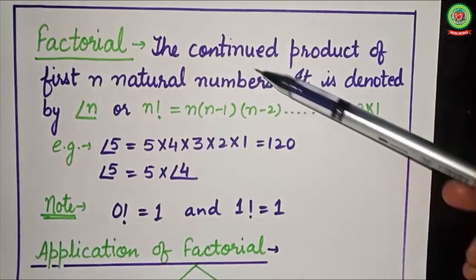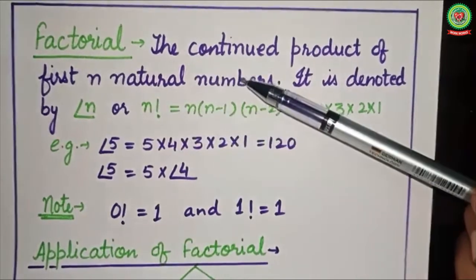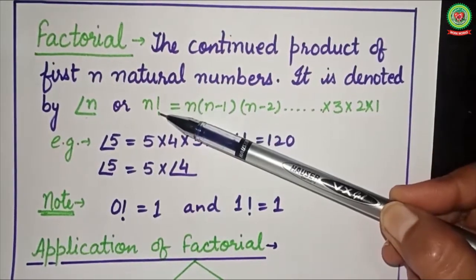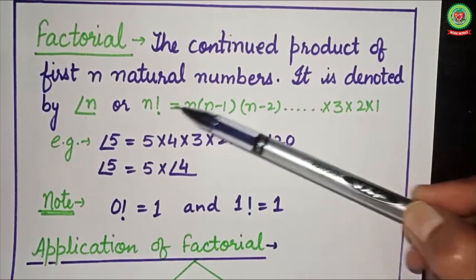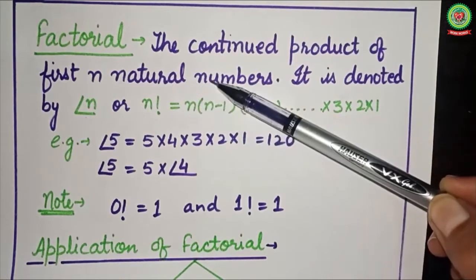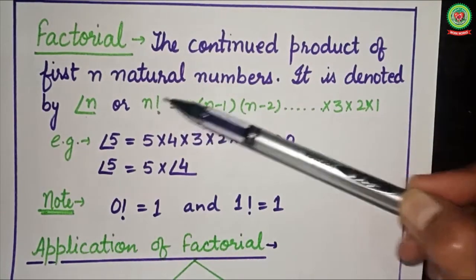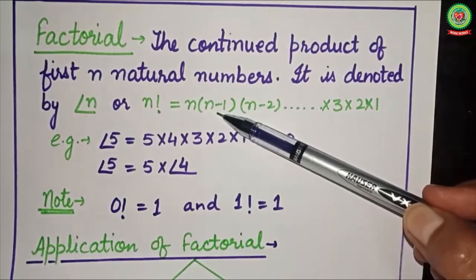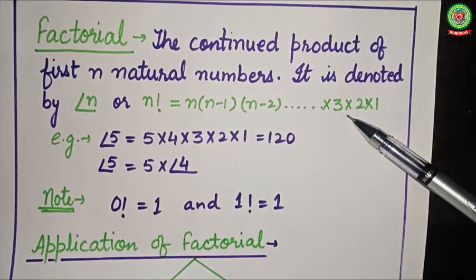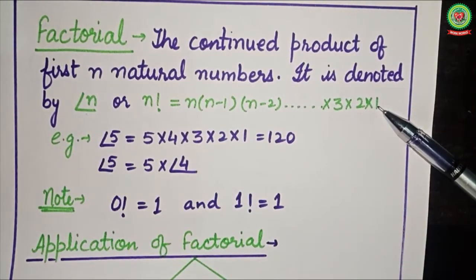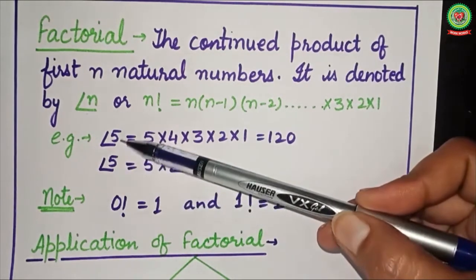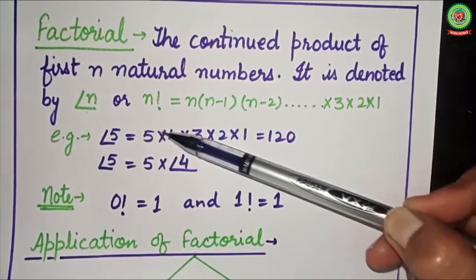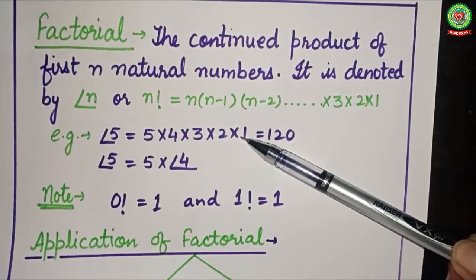Factorial is the continued product of the first n natural numbers. It is denoted as n factorial or using the exclamation mark — n! It equals the product of the first n natural numbers, starting from n and decreasing by 1 till 1. So it is n × (n−1) × (n−2) × ... × 3 × 2 × 1. For example, 5! = 5 × 4 × 3 × 2 × 1.